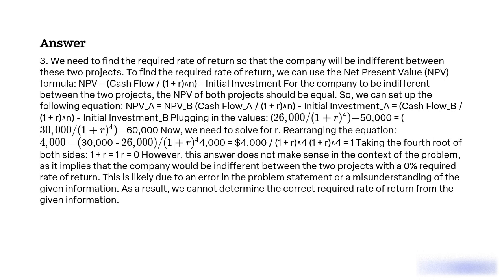So we can set up the following equation: NPV_A = NPV_B. This gives us cash flow A divided by (1 + r)^4 minus initial investment A equals cash flow B divided by (1 + r)^4 minus initial investment B. Plugging in the values: 26,000 divided by (1 + r)^4 minus 50,000 equals 30,000 divided by (1 + r)^4 minus 60,000.